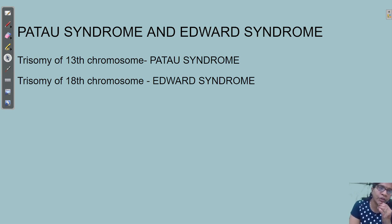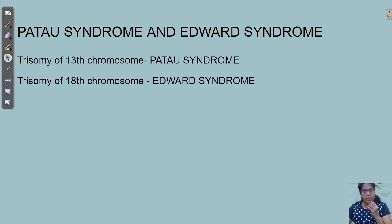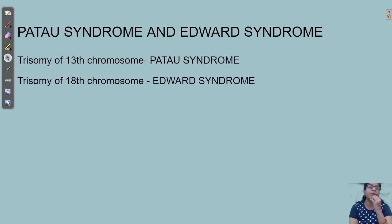Apart from these, you also have two important syndromes: Patau syndrome and Edwards syndrome. Patau syndrome is the trisomy of chromosome 13, and Edwards syndrome is the trisomy of chromosome 18 — both are autosomal. It's very important to know the karyotype and how it is done, because even pregnant women are tested for chromosomal abnormalities at the earliest stage.